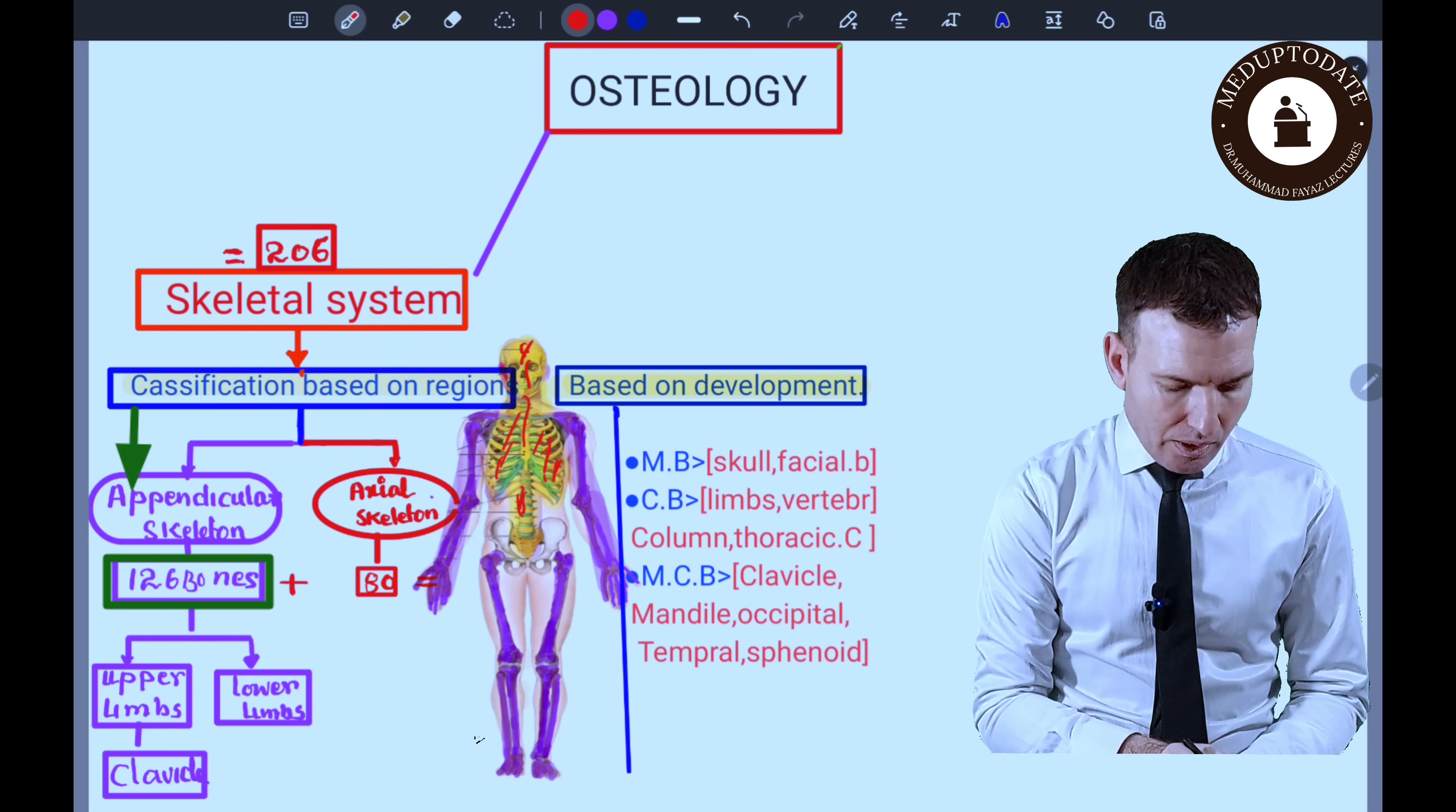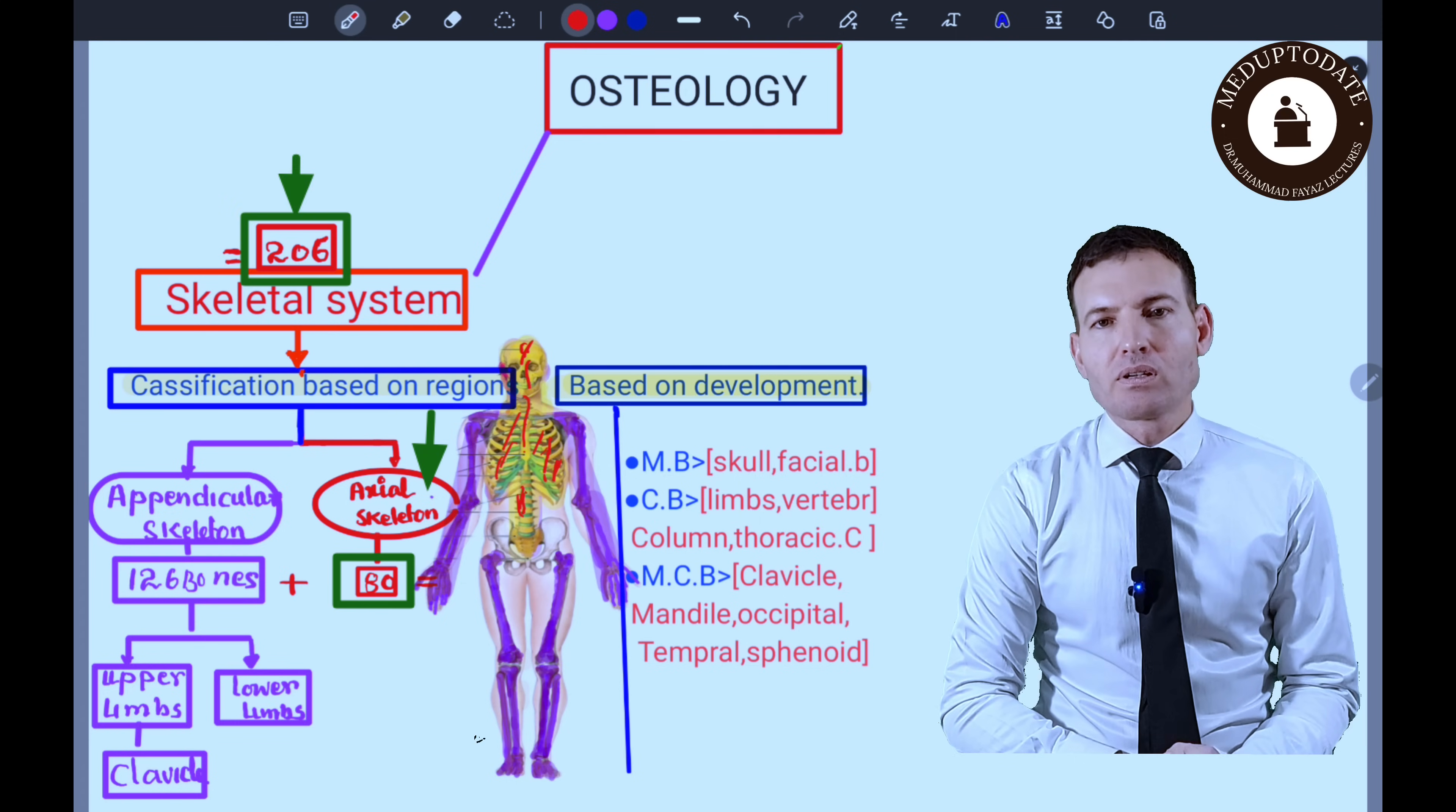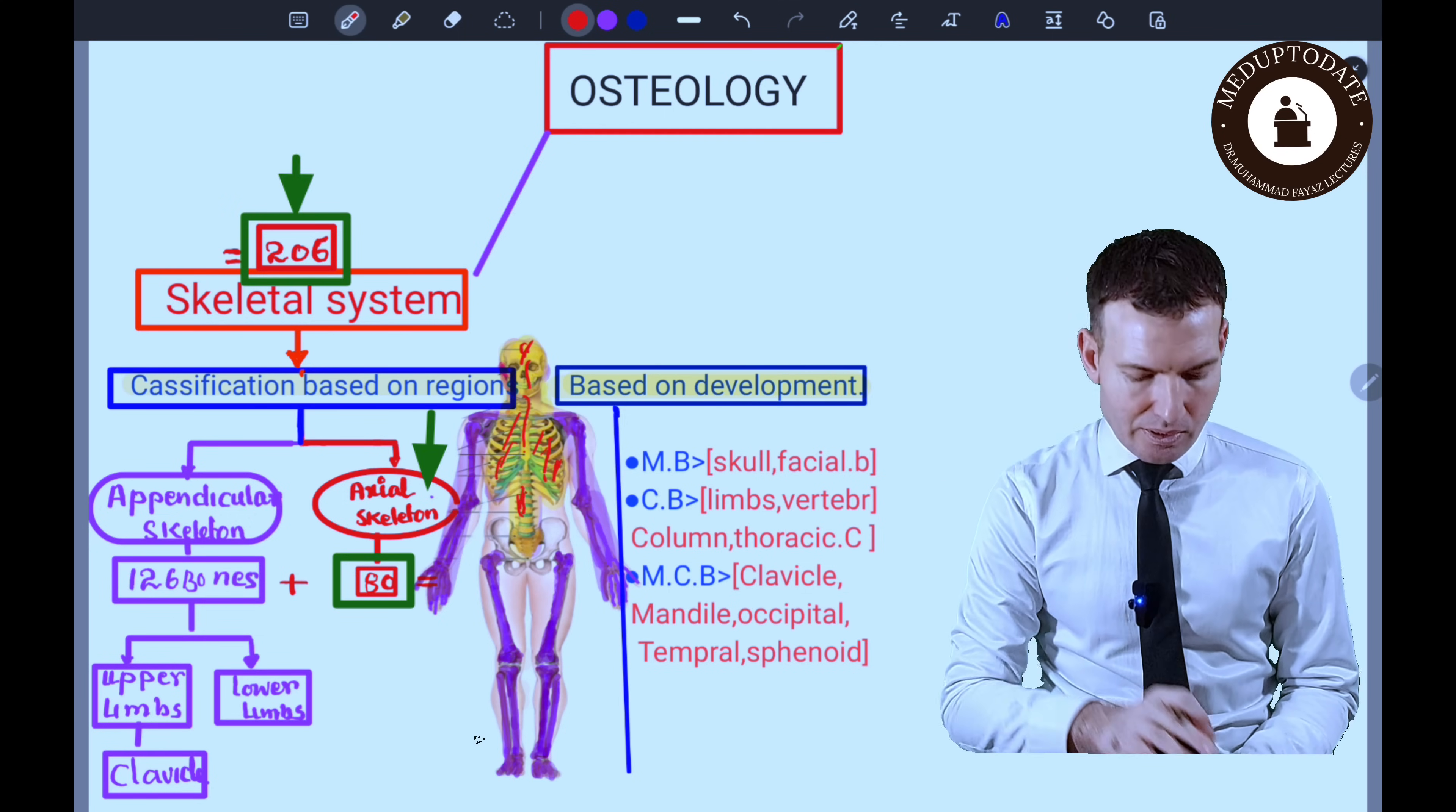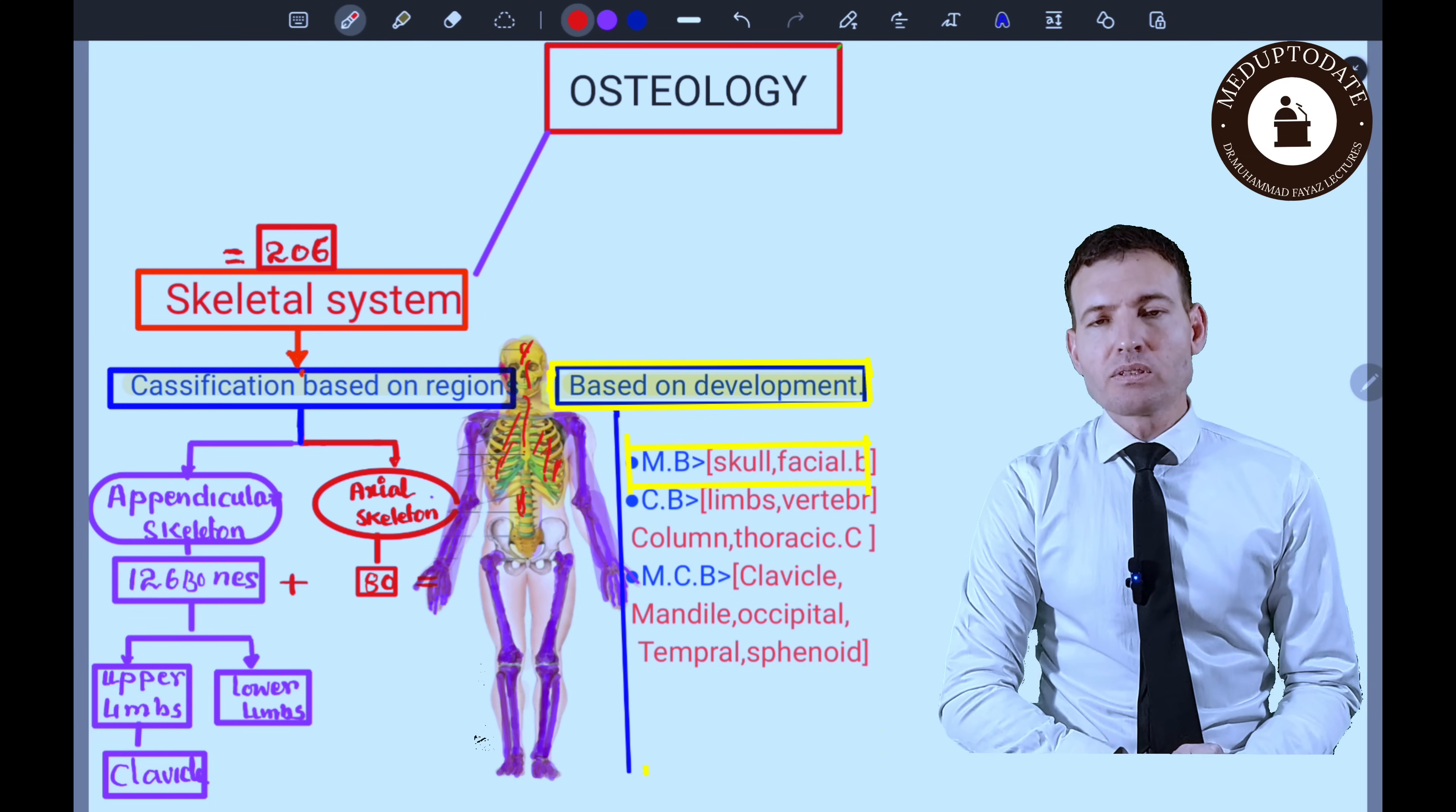To total these bones, we have 126 bones in appendicular skeleton with 80 bones in axial skeleton, and when we sum up, it becomes 206 approximately as I mentioned before. So it is not exactly the same value.